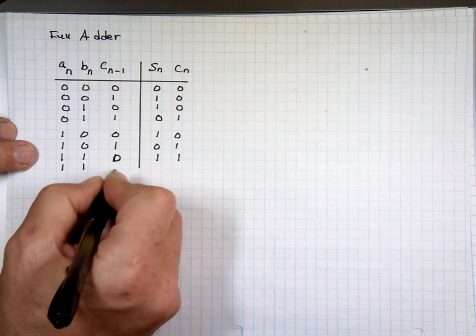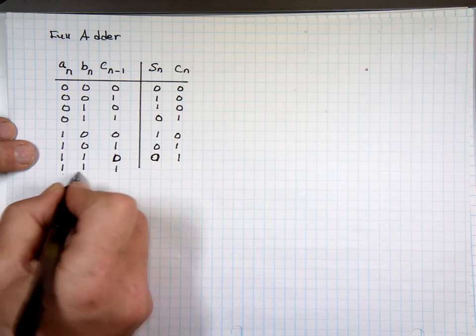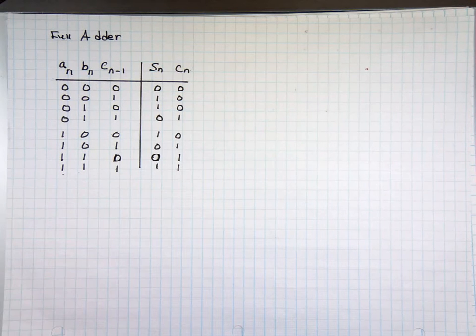I know I missed one. So 1, 1, 0 is 0, carry 1. And 1, 1, 1 is what? One, carry 1. This on the market, you can buy it right now. It's called a full adder. It works that way.